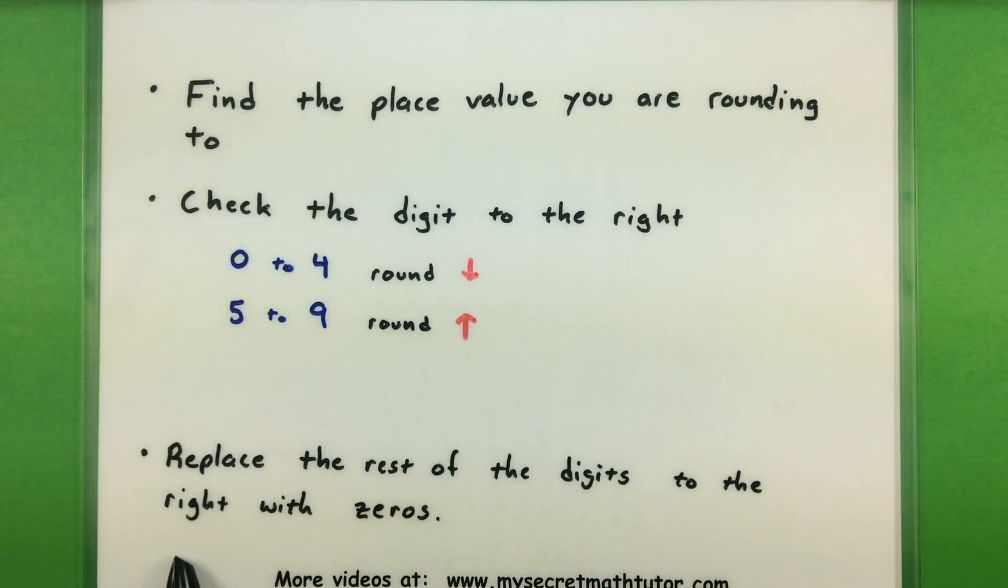After you've done your rounding, you want to replace the rest of your digits to the right with lots of different zeros.